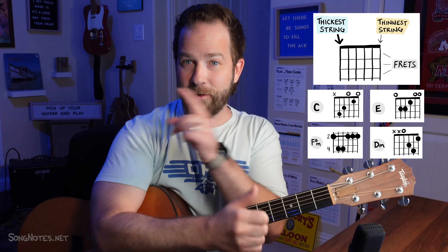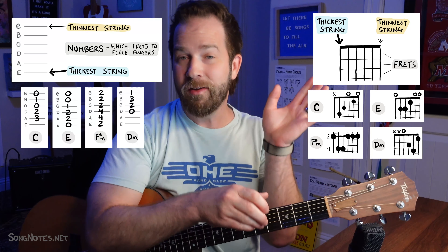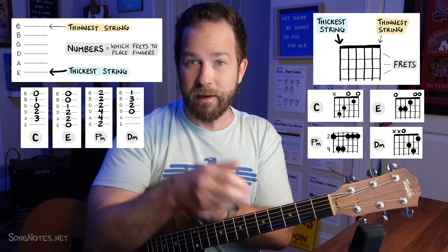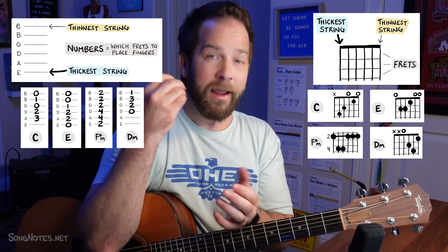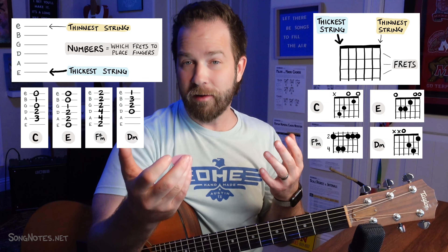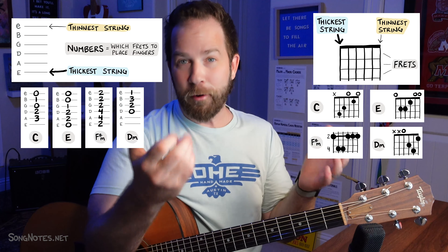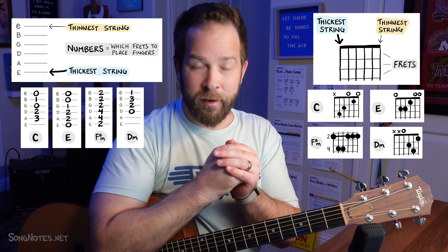The other form is tabs. Tabs have six lines going left to right, and they use numbers written on each line to tell you which fret you're going to put your fingers on.